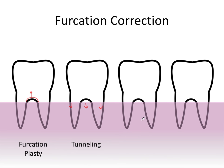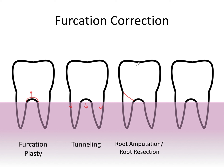The third treatment is called root amputation or root resection. This is where we actually cut one of the roots off. The root area is recontoured and smoothed, endodontic treatment is performed, the access is sealed with restorative material, and a crown is placed to leave an open space for hygiene. A common example is the distobuccal root of the maxillary first molar, which is the smallest root and therefore most common for amputation because the other two roots can provide adequate support to retain the tooth.